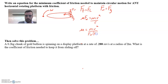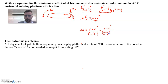We also know FN equals FG equals MG. Plugging that in: mu equals mv² over MG times R. The masses cancel, and our equation for mu on a rotating platform is mu equals v² over GR.